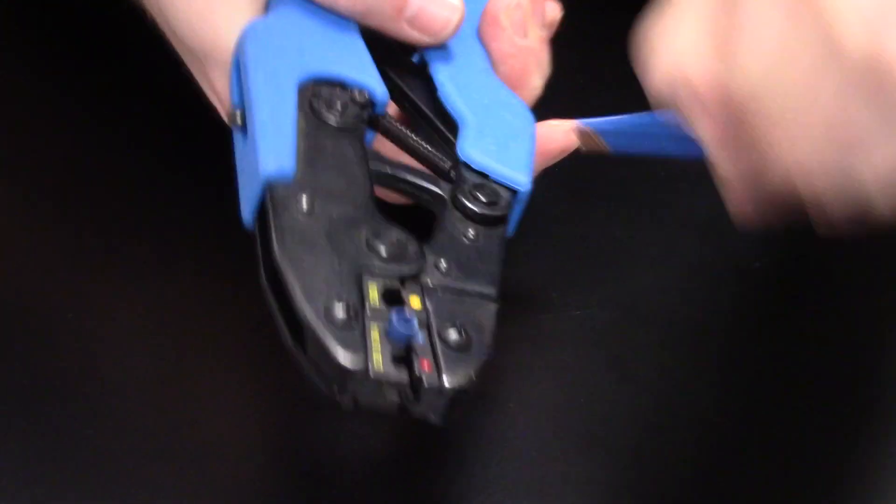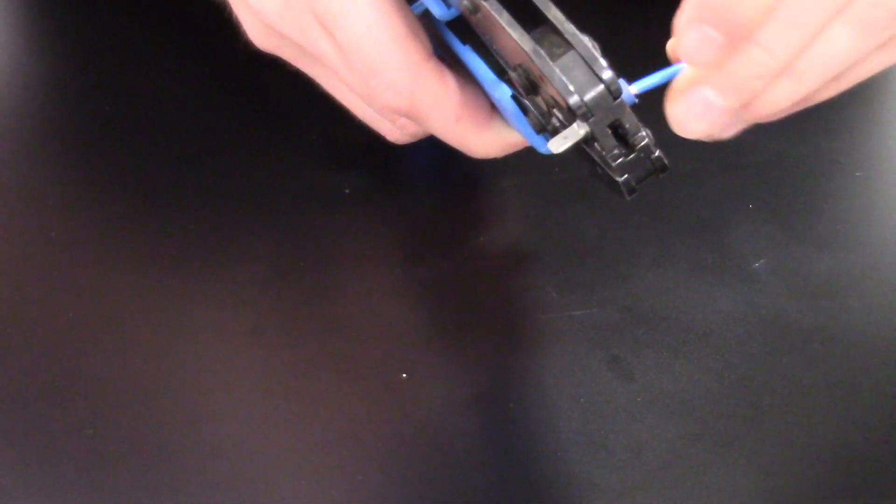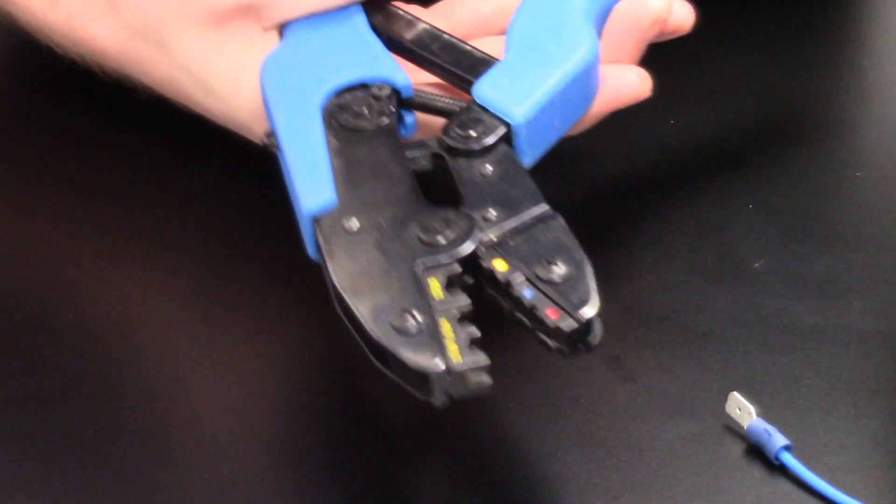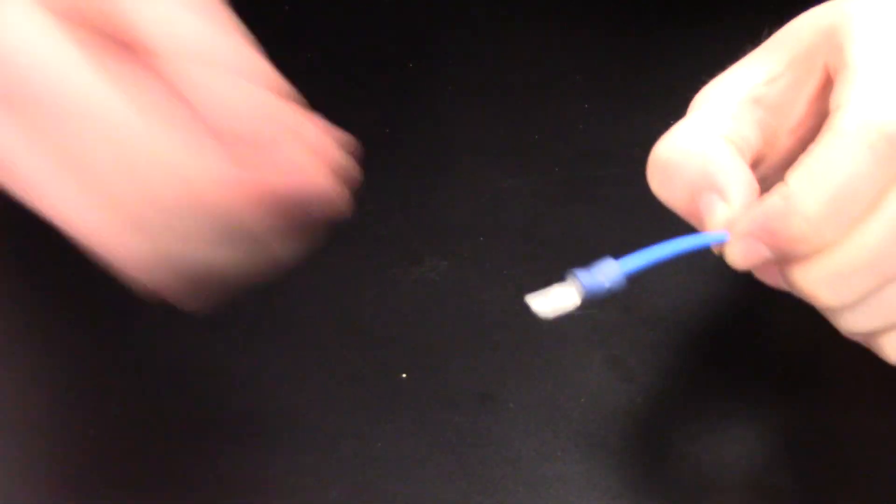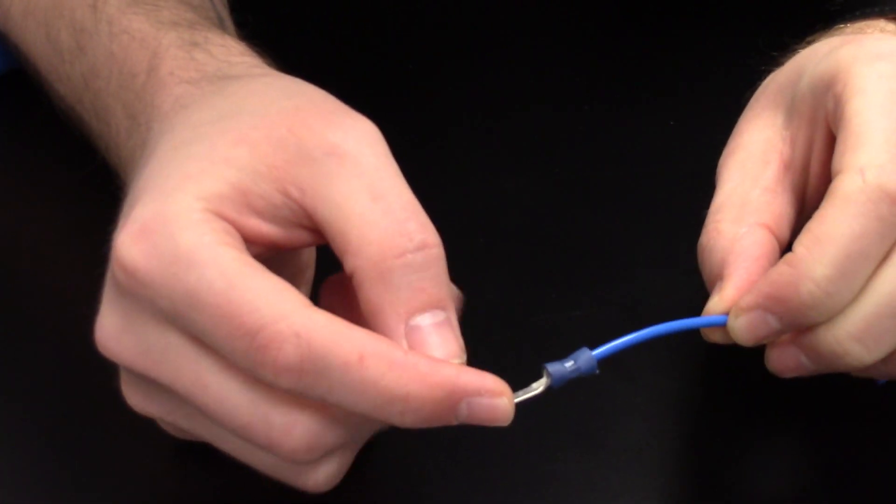If you need help, if you gently squeeze the terminal in place this will hold the terminal whilst you insert your cable which can be very helpful when tackling a project. Simply insert the cable again, squeeze on the tool and you have your perfect nice neat crimp.